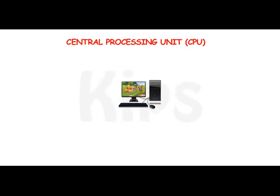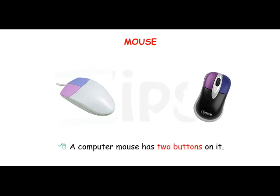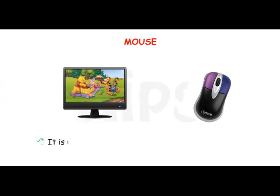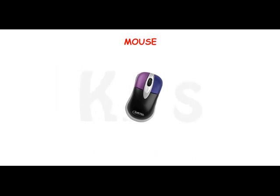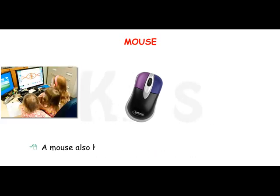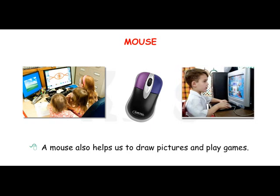Students, let me explain about the mouse. A computer mouse has two buttons on it. It is used to point, move and select any item on the computer screen or monitor. A mouse also helps us to draw pictures and play games.